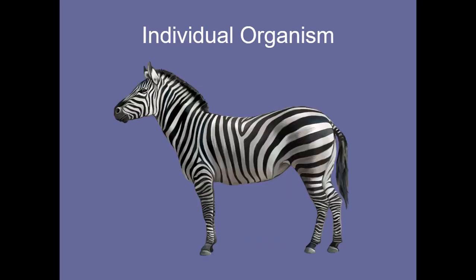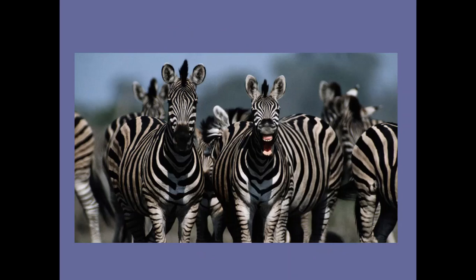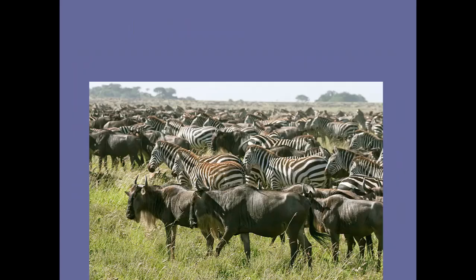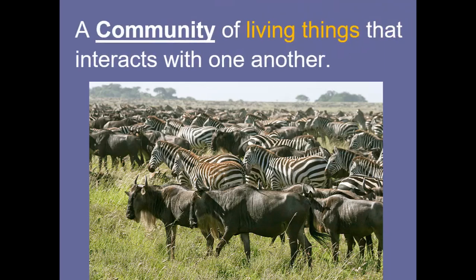Let's start with the individual organism — we'll use a zebra. If you put a bunch of different zebras together, that would be a population. Now if we have two different populations — zebras and wildebeests — and you could also say the grasses are a population too — that would be a community, because that's all the living things that interact with one another.